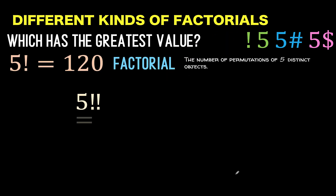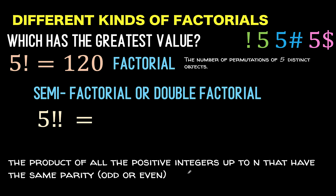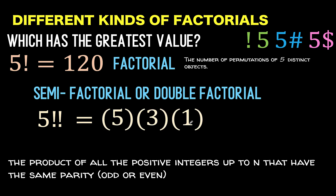The next one is 5 double exclamation point, which is the semi-factorial or double factorial. Some may think of 5 double factorial as bigger than 5 factorial, but actually that is not correct. This 5 double factorial is the product of all positive integers up to n that have the same parity. The number here is an odd number.